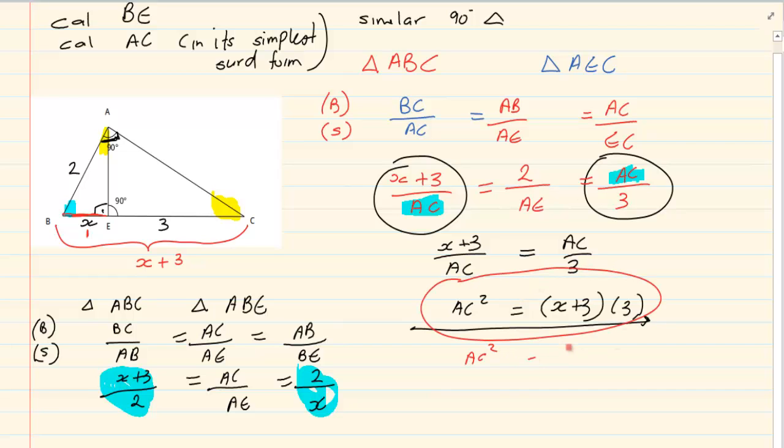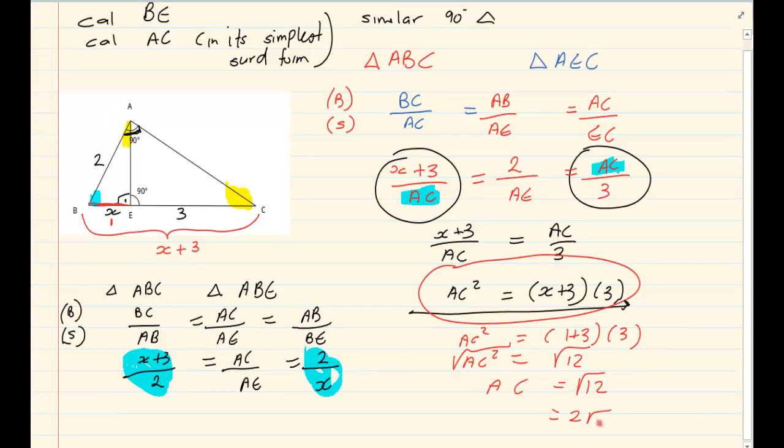We have AC squared is equal to 1 plus 3 into 3 which is 4 times 3, 12. But it's AC squared. So we are going to root it. So we have AC is equal to root of 12. Now if they say they want it in the simplest third form. Root of 12 is not in its simplest third form. The simplest third form is 2 root of 3.